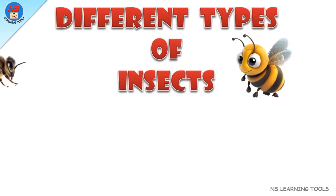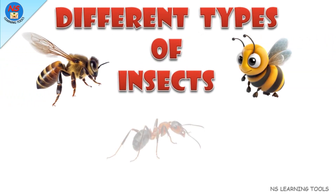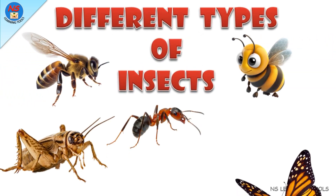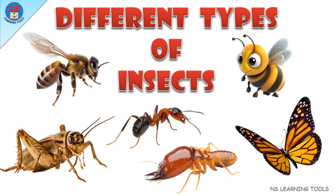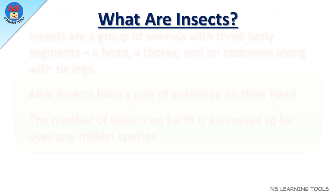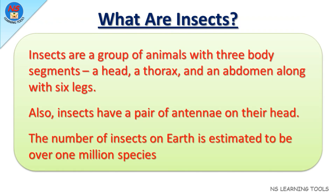Hello friends, how are you? In this video we will learn about different types of insects. So let's start. What are insects? Insects are a group of animals with three body segments: a head, a thorax, and an abdomen, along with six legs. Also, insects have a pair of antennae on their head. The number of insects on earth is estimated to be over 1 million species.